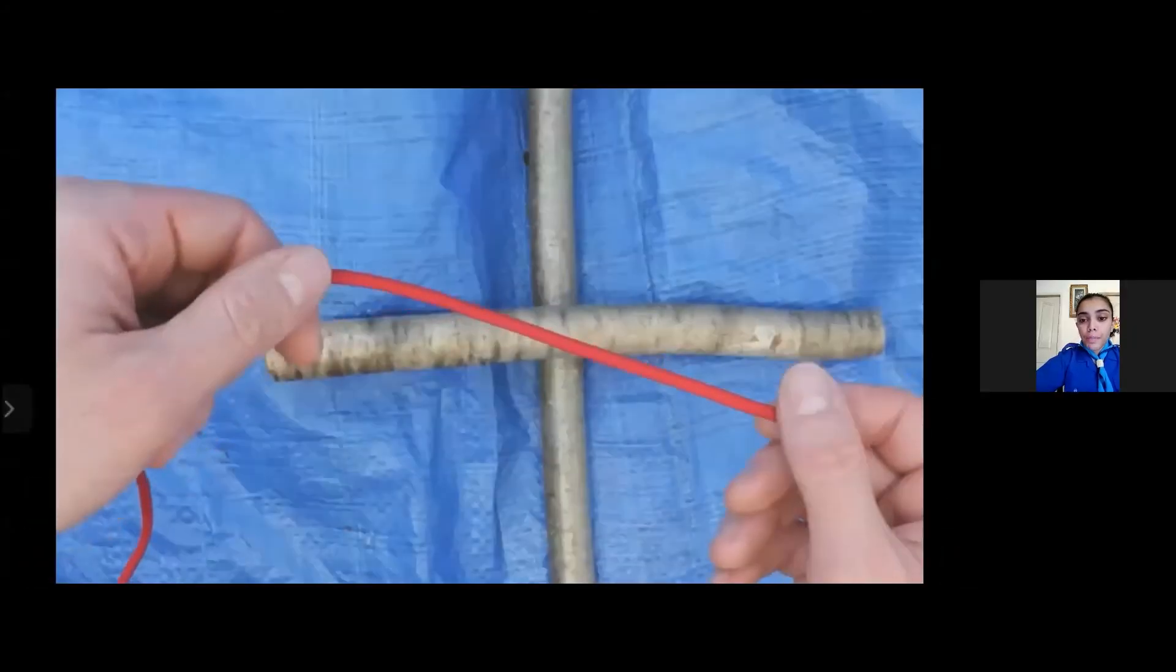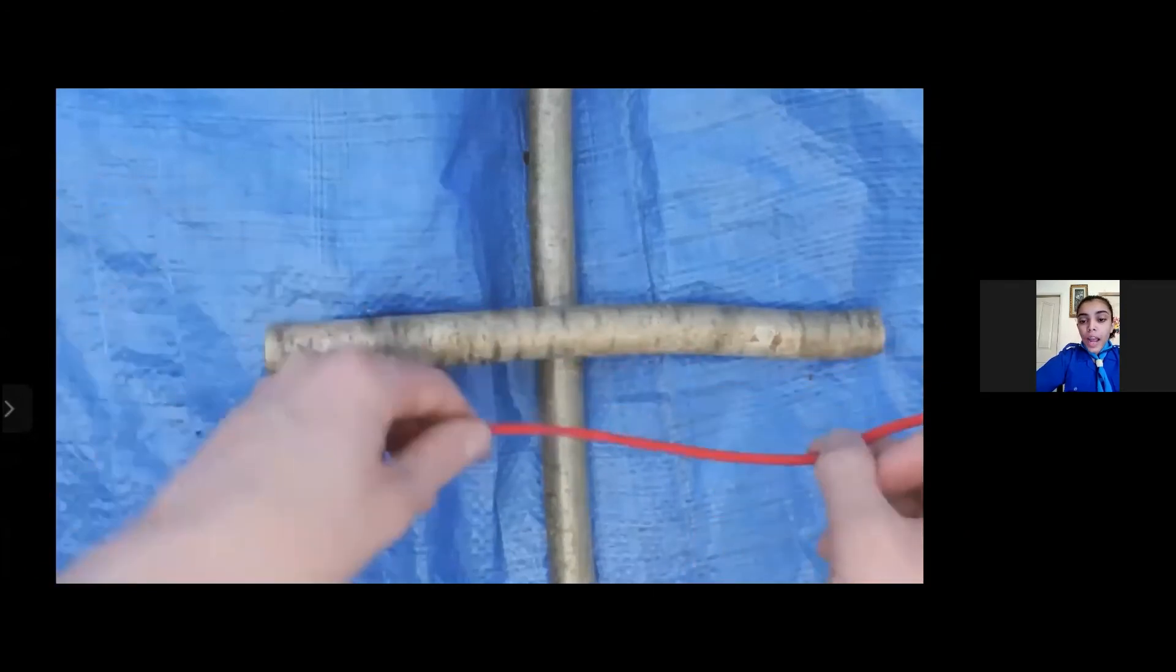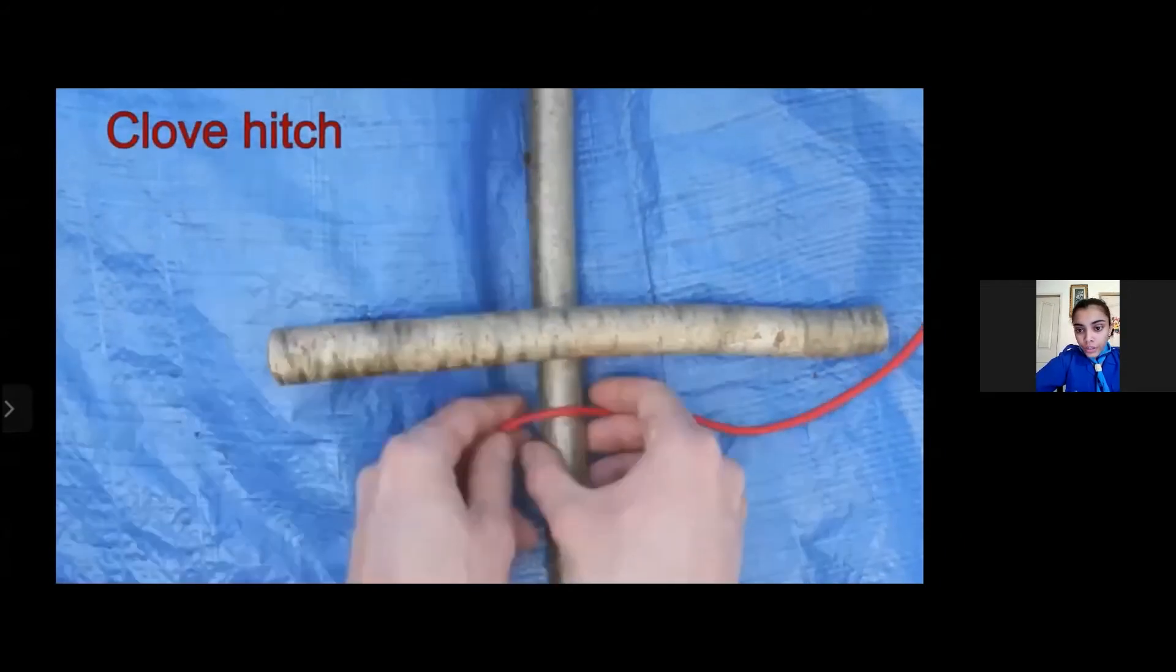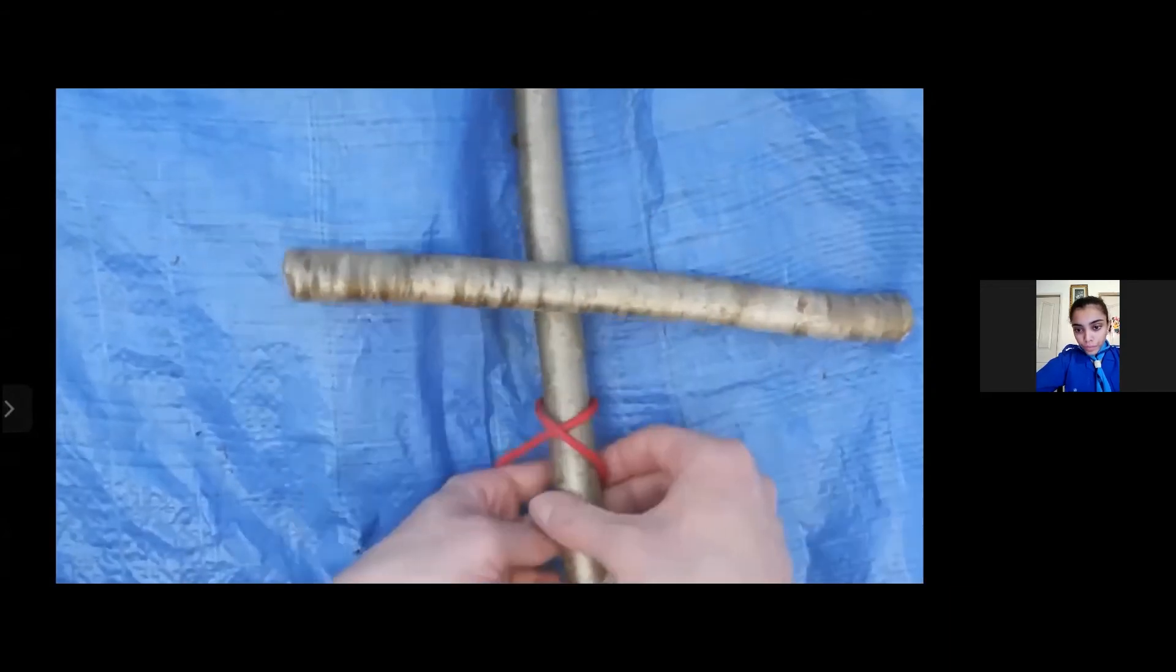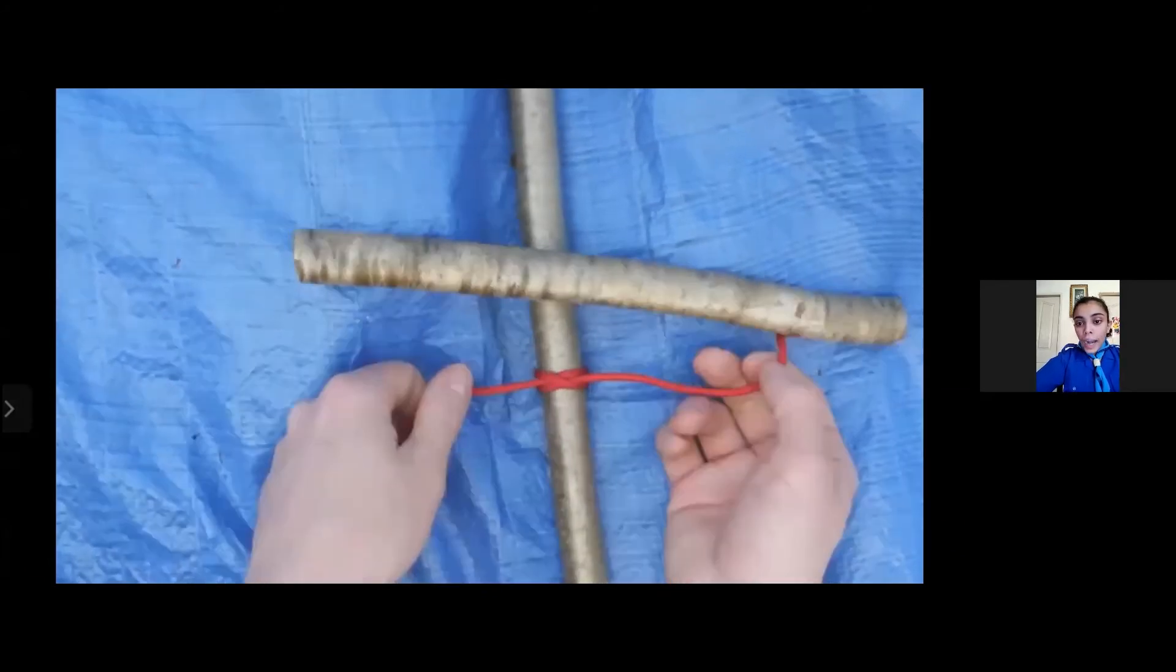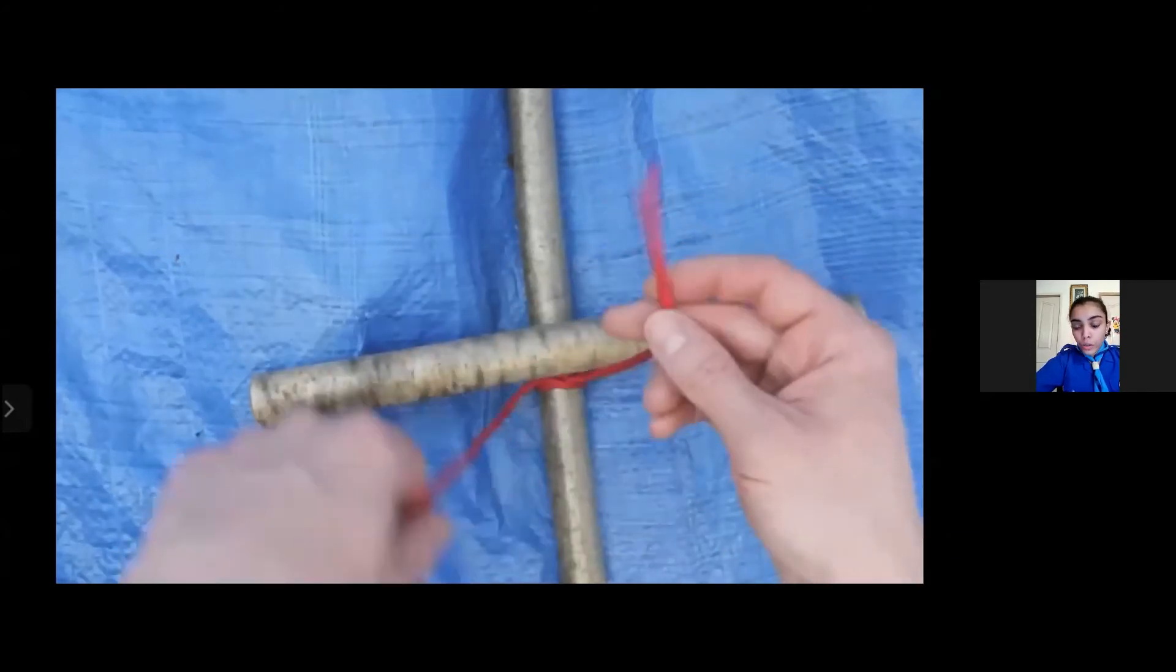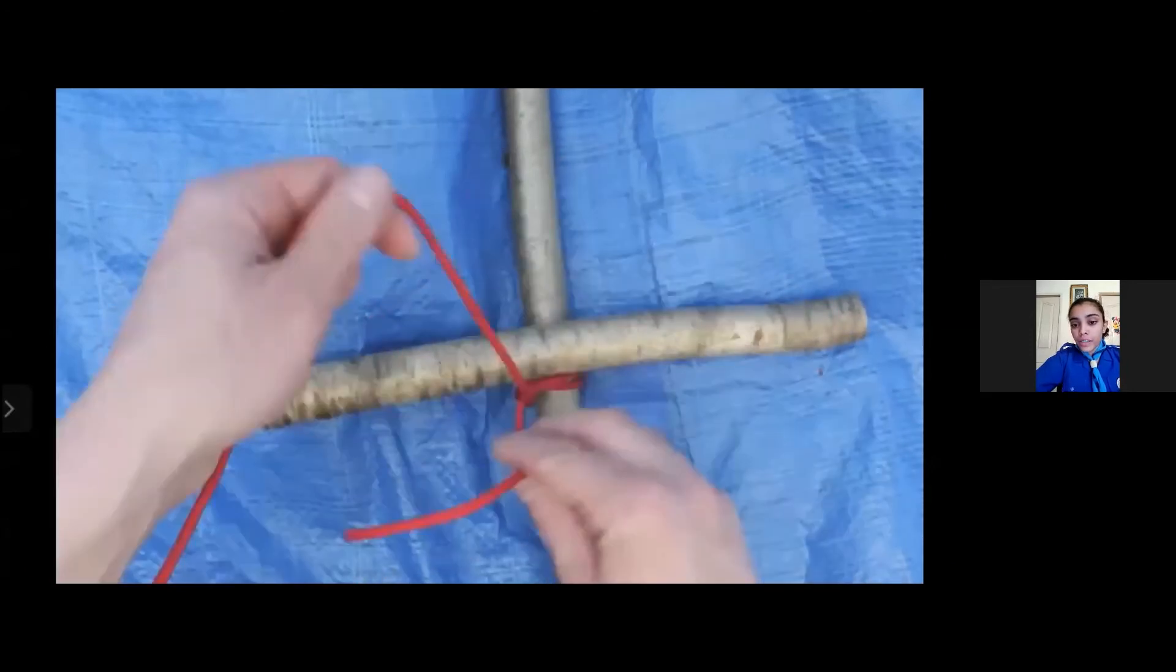So the first step in a square lashing is to put two of the poles at a 90 degree angle to each other. Now the person is tying a clove hitch to the first area. You have to make sure that the clove hitch is very tight as that is the base to this entire knot. Also the length of the rope that is there, you have to rope it around the other rope so that it doesn't get in between.